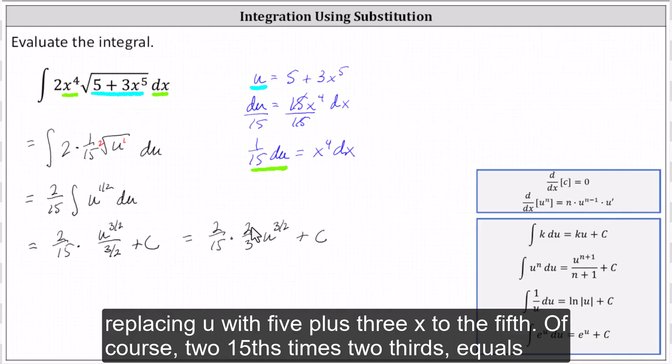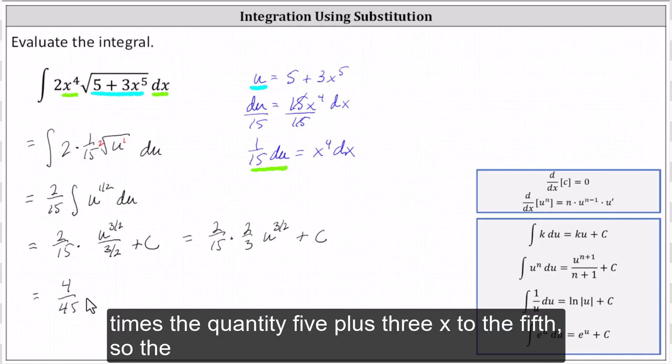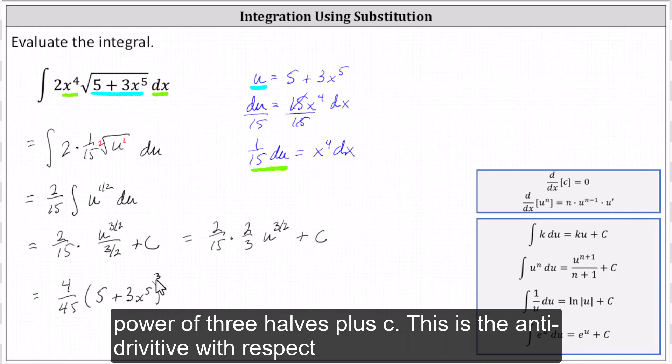Of course, 2/15 times 2/3 equals 4/45, which gives us 4/45 times the quantity (5 + 3x^5) to the power of 3/2 plus c.